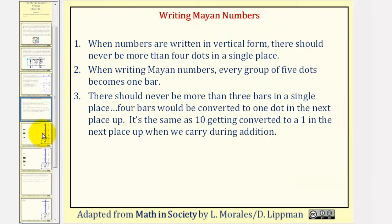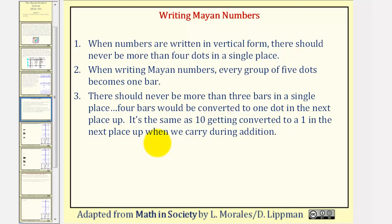Before we look at our examples, let's talk about writing Mayan numbers. Rule one: when numbers are written in vertical form, there should never be more than four dots in a single place. Rule two: every group of five dots becomes one bar. Rule three: there should never be more than three bars in a single place — four bars would be converted to one dot in the next place up, the same as ten getting converted to one in the next place up when we carry during addition in base ten.